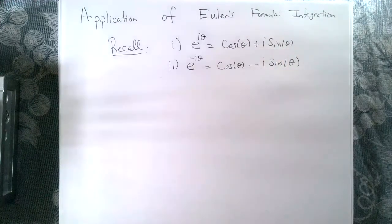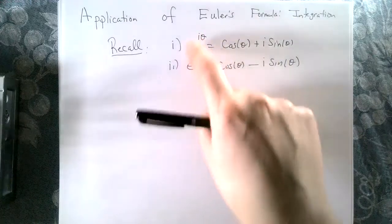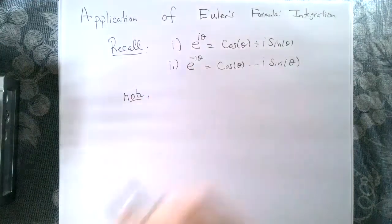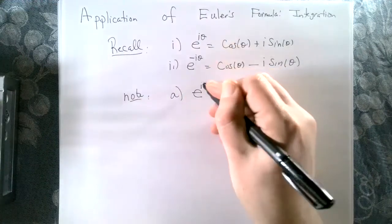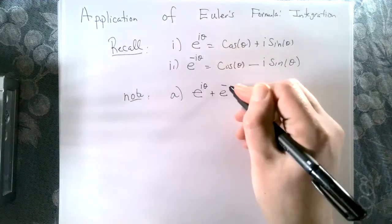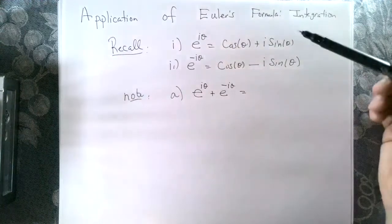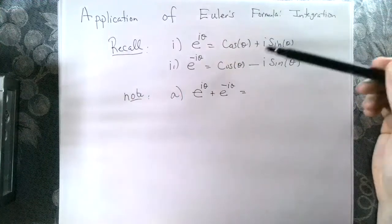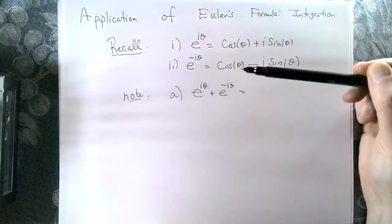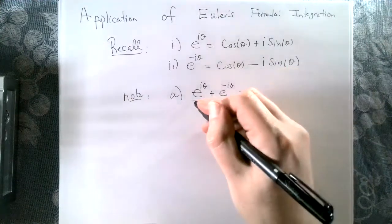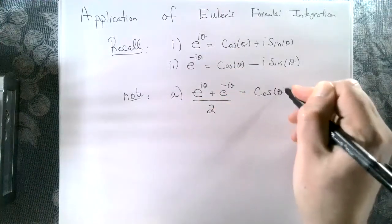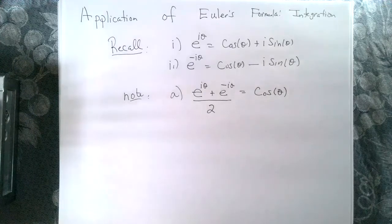We're going to do a couple of computations. First, let's take the sum of the left side — that should equal the sum of the right side. If I take the sum of the right side, the sine terms vanish and I have two cosine of theta. Dividing out the two gives me another expression for cosine of theta.